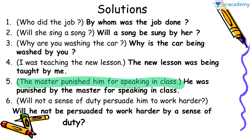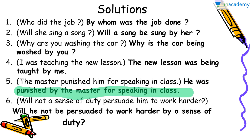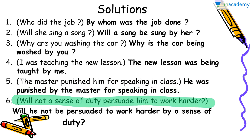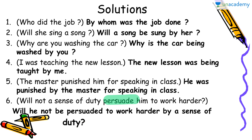The master punished him for speaking in class. The main verb here is 'punished.' Don't get confused by 'speaking' — it is a gerund because 'for' comes before it. 'Punished' is the first verb after the doer and is in second form. The sentence becomes: He was punished by the master for speaking in class. Next: Will not a sense of duty persuade him to work harder? 'Persuade' is in first form after 'will.' It becomes: Will he not be persuaded to work harder by a sense of duty? Note that 'him' changes to 'he' in the passive.